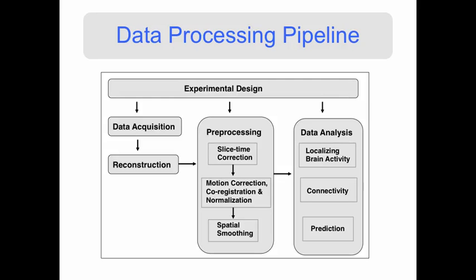Here we see an example of the data processing pipeline for analyzing fMRI data, and we see that there are many steps involved. We're going to use this to walk through what we'll be doing in this class. In the first week, we'll talk about data acquisition and reconstruction — that's the later modules this week. But in order to really understand data acquisition, we need to first know a little about MR physics, so we're going to start there.